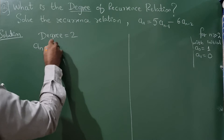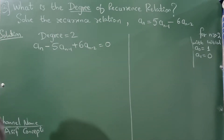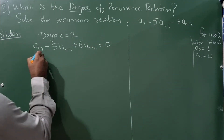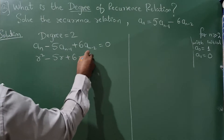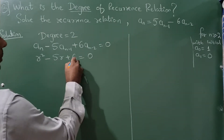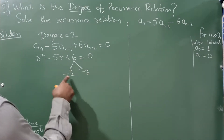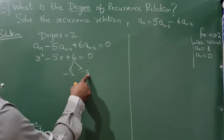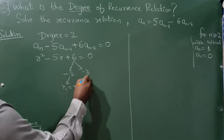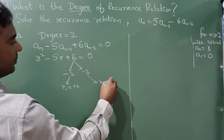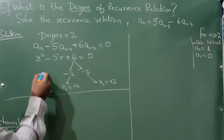aₙ - 5aₙ₋₁ + 6aₙ₋₂ = 0. Now you have to find the characteristic equation. Since the degree is 2, I will write r² - 5r + 6 = 0. You can find the roots by calculator or by factorization method. I will go with the factorization method. The factors are -2 and -3, since (-2)×(-3) = 6 and (-2)+(-3) = -5. So the two roots are r₁ = 2 and r₂ = 3.